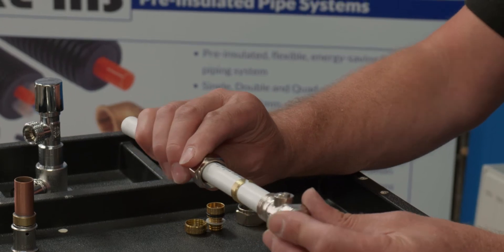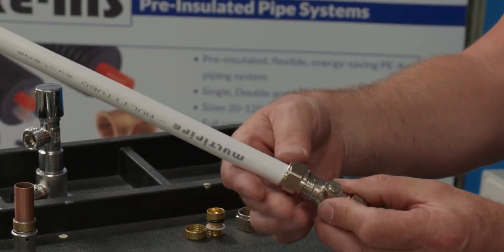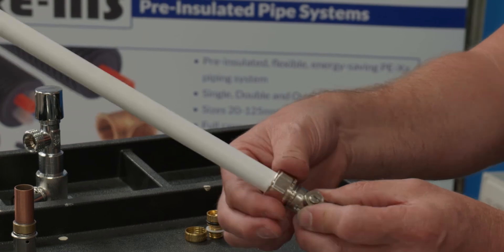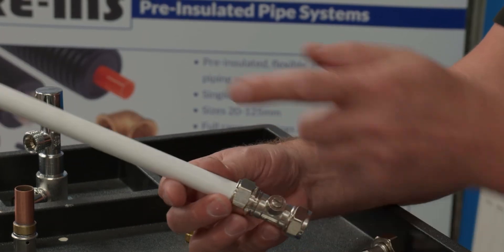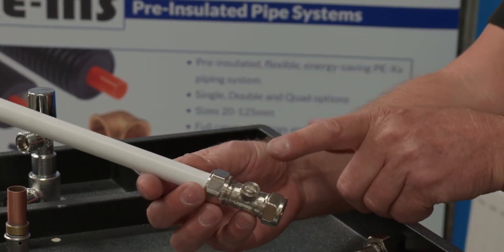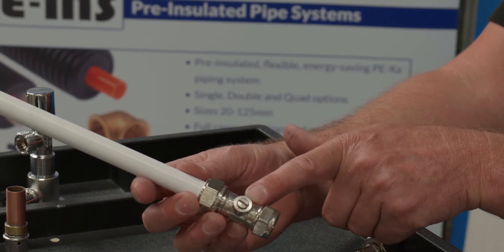We insert the adapter into the fitting fully home and then mechanically with a spanner, tighten up there, pair of spanners allows you to connect that 16mm MLC directly onto a standard 15mm compression fitting.